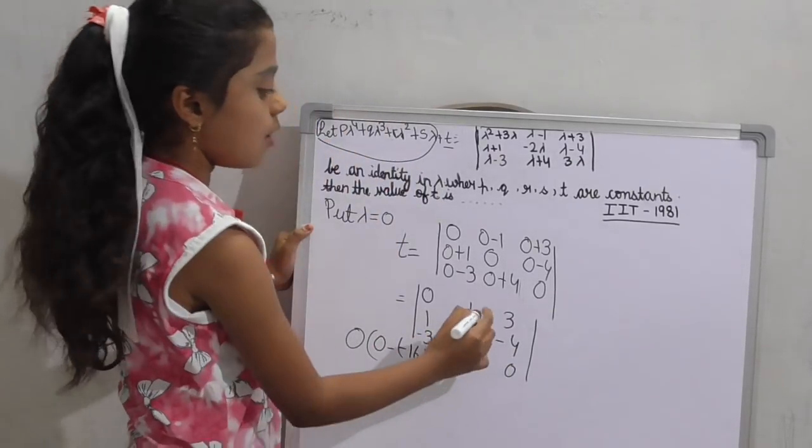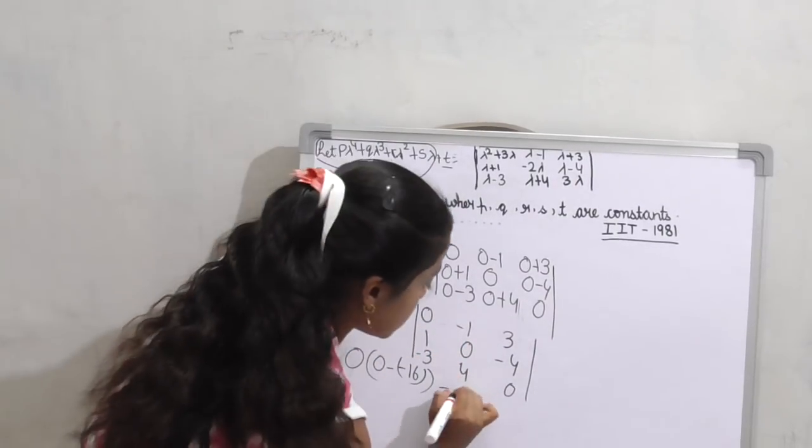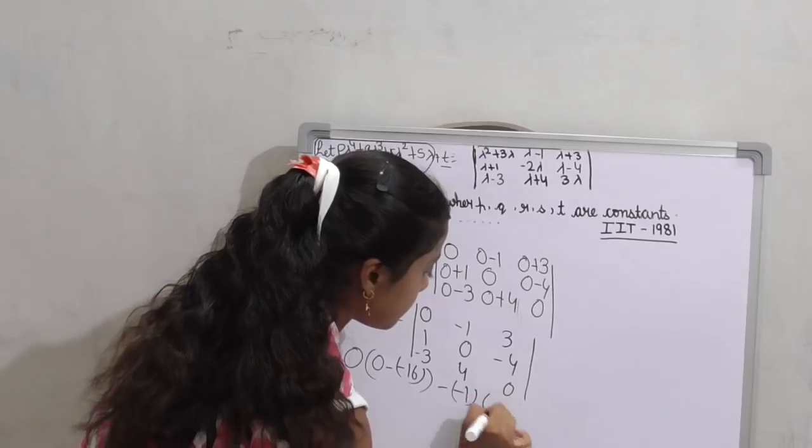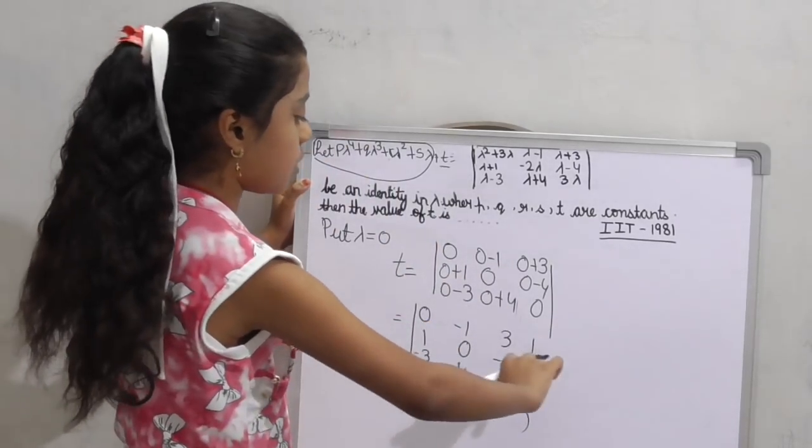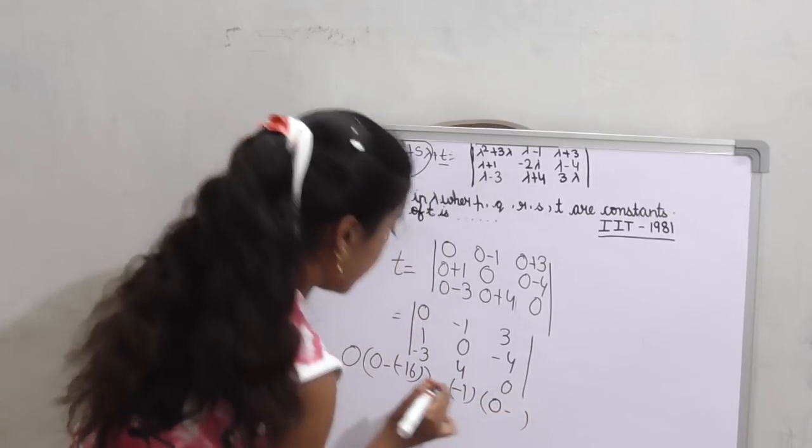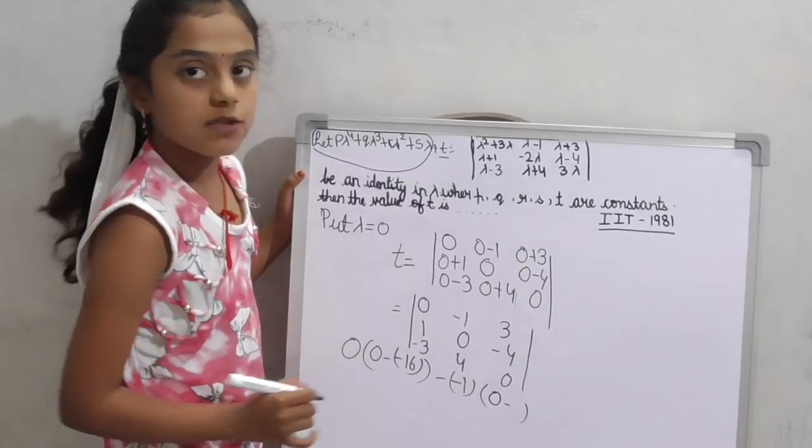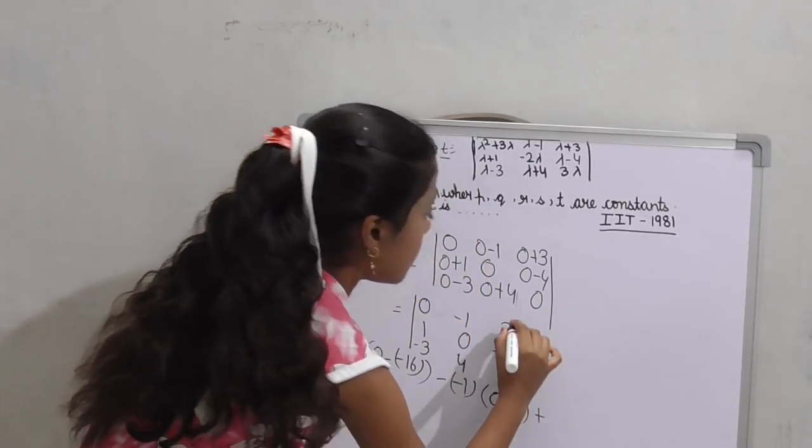Take the second element, which is minus 1. Put a bracket. Leave row 1 and column 1. 1 into 0, 0, minus 3 into minus 4, 12, plus 3.